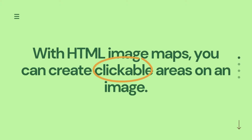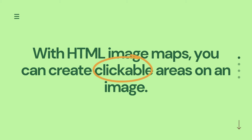We can say that we use HTML image maps when we want to create clickable areas on the user's web page. Normally, there is no clickable area on a plain web page, but if we want to create an image on the user's web page with clickable regions, we use an image map — that's where we can create clickable areas.